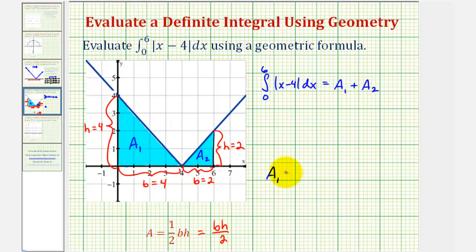So area sub one is going to be equal to base times height divided by two, or four times four divided by two. It'll be sixteen divided by two, or eight.